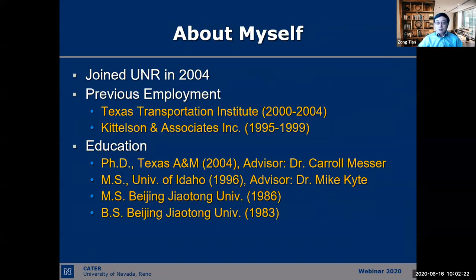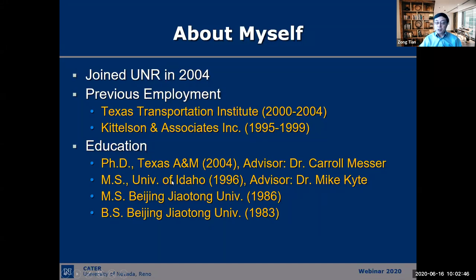Just briefly about myself: I joined UNR in 2004. Previously I worked at the Texas Transportation Institute, where I also got my PhD degree, and I worked at Kittelson and Associates in Portland, Oregon for about five years. My master's degree is from the University of Idaho. Two of my advisors — Dr. Carol Messer, who was the developer of Passer 2, and Dr. Michael Kite, who was the developer of the well-known hardware-in-the-loop system.